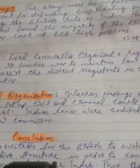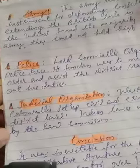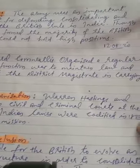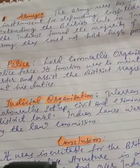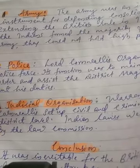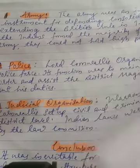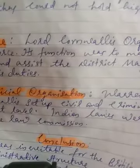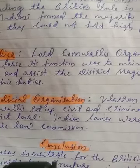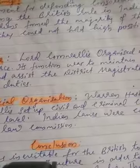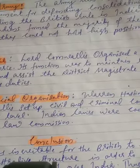Lord Cornwallis organized a regular police force. Its function was to maintain law and order and assist the district magistrate in carrying out his duties. The districts were organized into thanas under the charge of darogas. Villages and cities had chowkidars and constables.